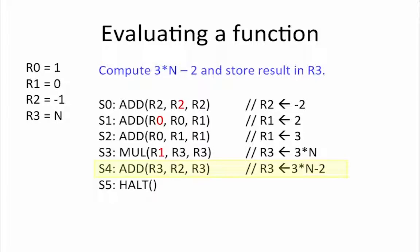Finally, we add R3 and R2 to produce 3 times n minus 2 and store that result back into R3. S5 just executes a HALT instruction to indicate that we are done.